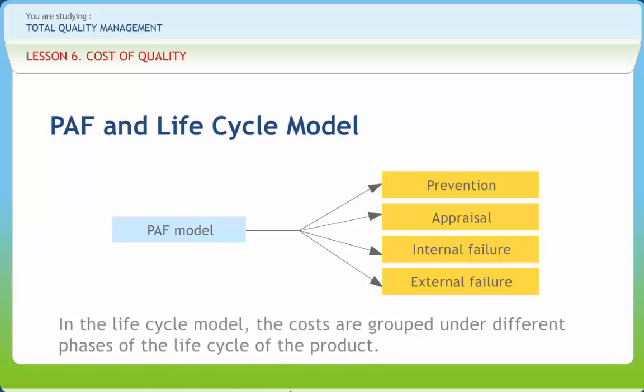In the life cycle model the costs are grouped under different phases of the life cycle of the product. Quality cost increases over time. Quality improvement is synonymous with a reduction in the cost of poor quality.